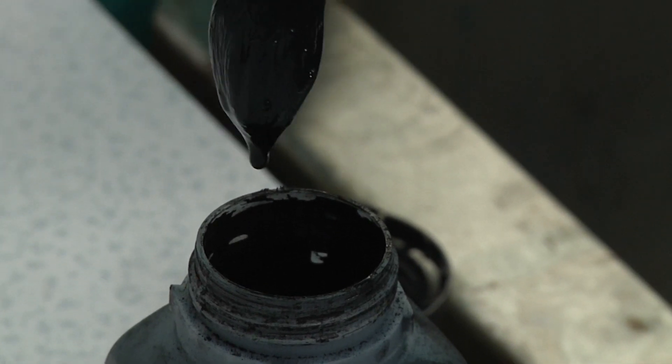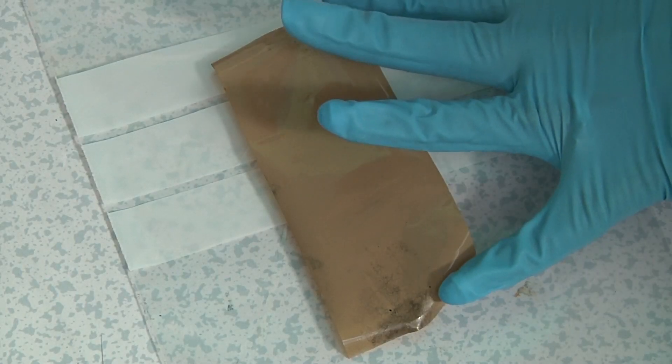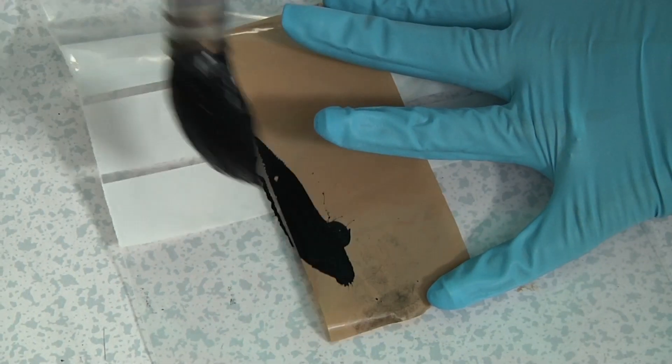Firstly, a brush is dipped into the powder suspension solution. This is applied to the surface in a similar motion to applying paint.